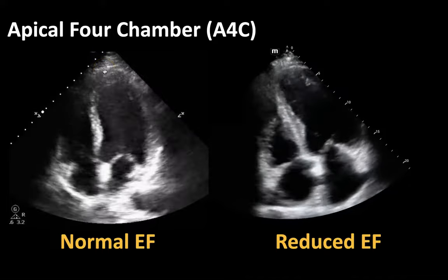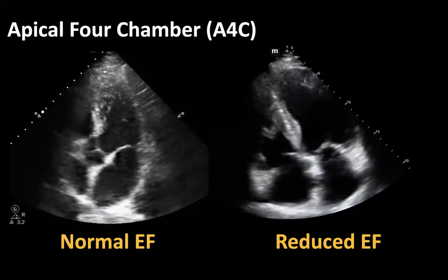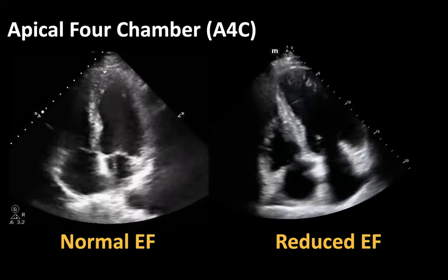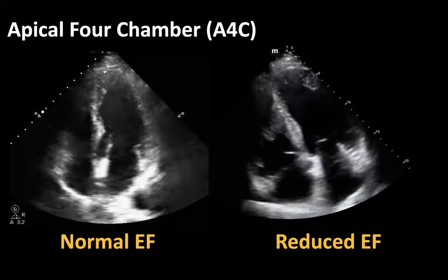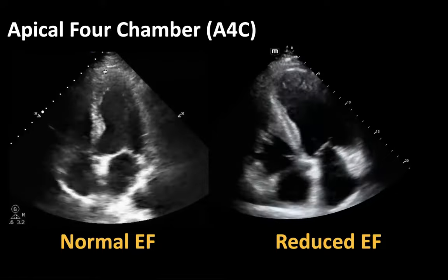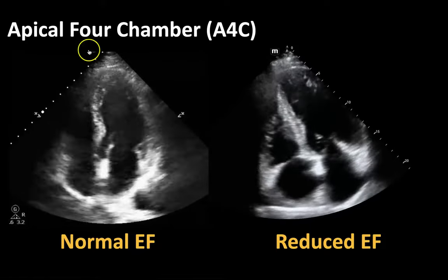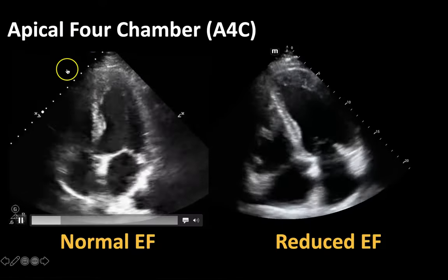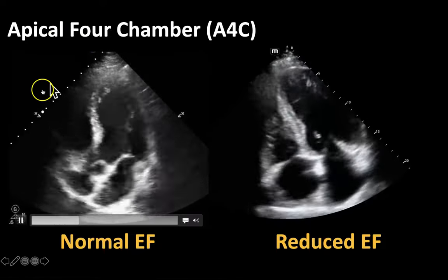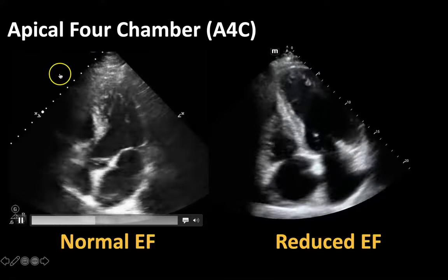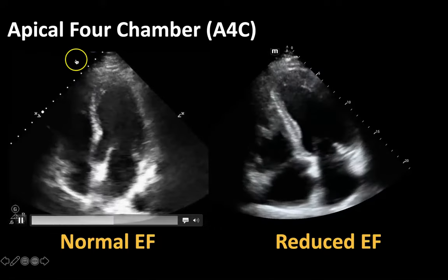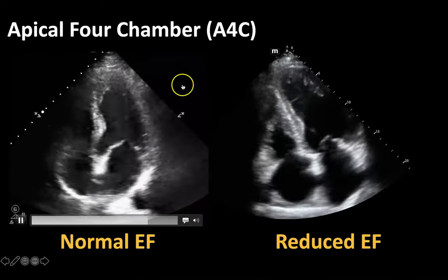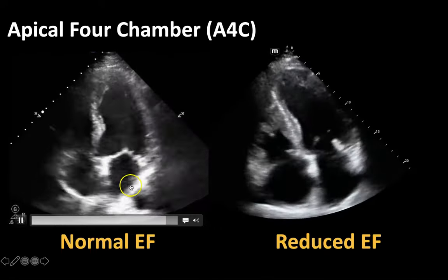So now let's look at your apical four chamber view. This is where you put your probe at the apex of the heart, and your probe marker is going to be facing towards the patient's right, which is standard convention.